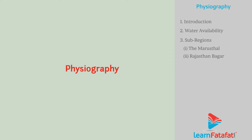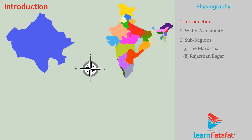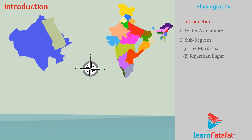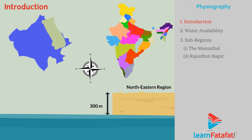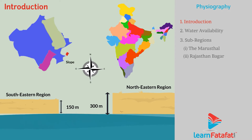Physiography. The northeastern region has an average elevation of 300 meters while the elevation of the southeastern part is 150 meters. This means that the plain slopes towards the west and south.